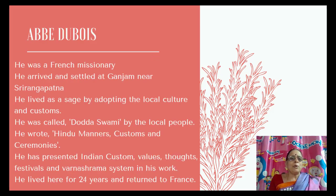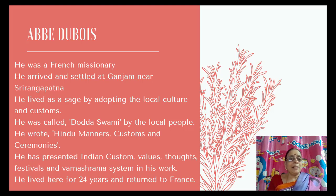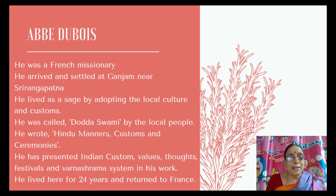Abbey Du Bois was a French missionary — a person who came to spread the Christian religion. He arrived and settled in Ganjo near Srirangapatna, a historical place in Mysore kingdom renowned for the rule of Tipu Sultan. He lived as a sage by adopting local culture and customs, never living as a Western person. He adopted Indian culture, lived as a sanyasi, and was called Dodda Swami — meaning 'senior Swami' — by the local people.